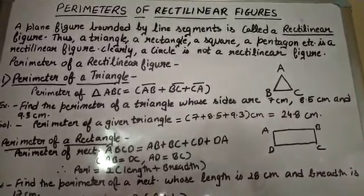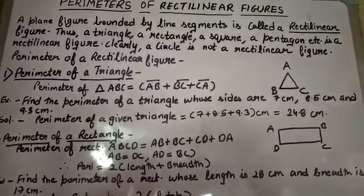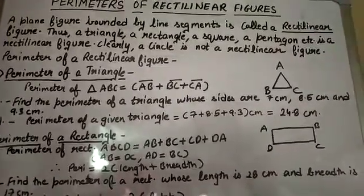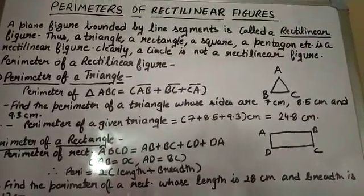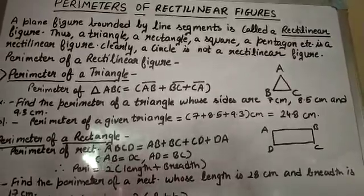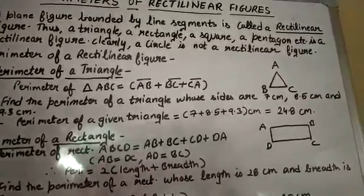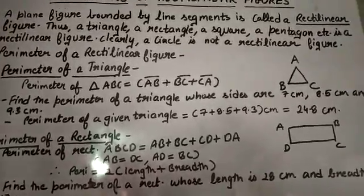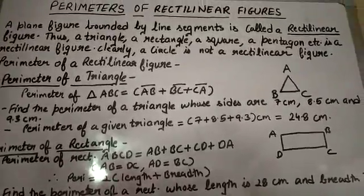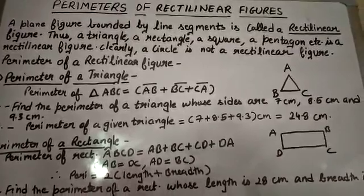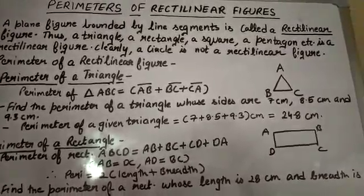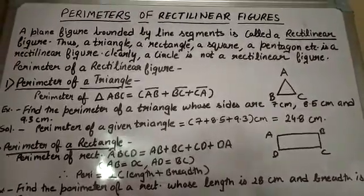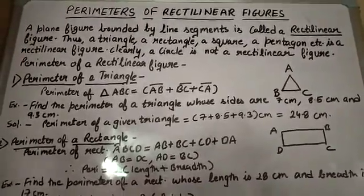...is called a rectilinear figure. Thus a triangle, a rectangle, a square, a pentagon — they all are rectilinear figures. But a circle is not a rectilinear figure. Why? Because it is not bounded by line segments.